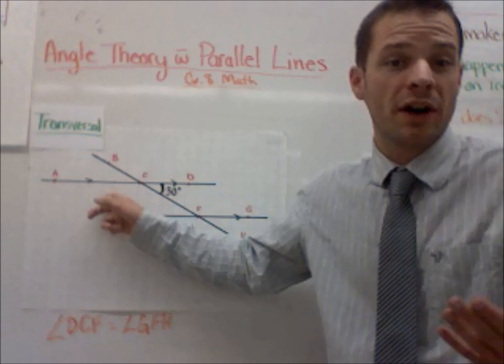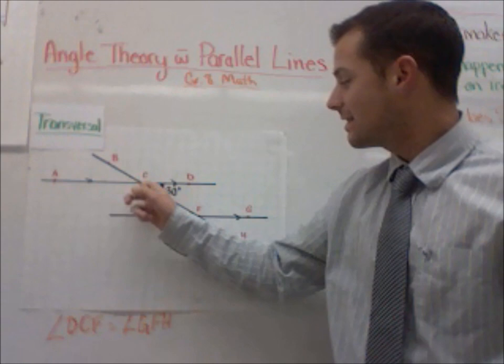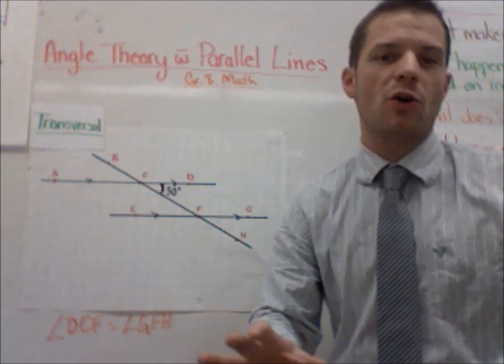180 subtract 30 is going to give us 150 degrees. So we could already, with the knowledge that we have, say that angle ACF is going to be 150 degrees. But there's another way to go about doing that.